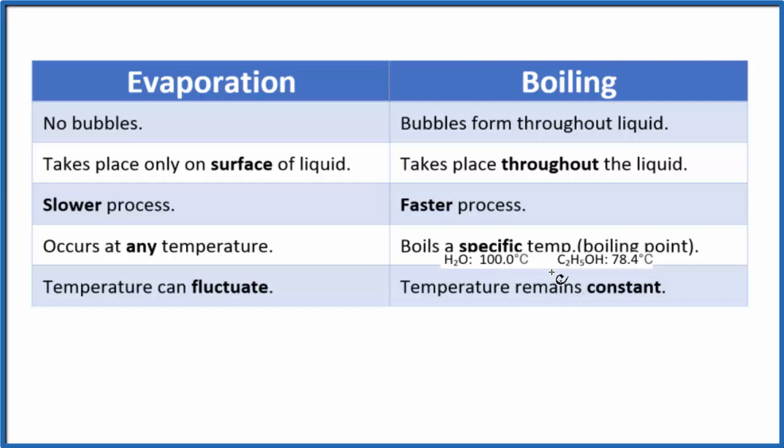The only way you can make it boil at a higher temperature is to put it under pressure, like a pressure cooker. So with boiling, once we hit our boiling point, the temperature won't go up anymore. It'll remain constant.